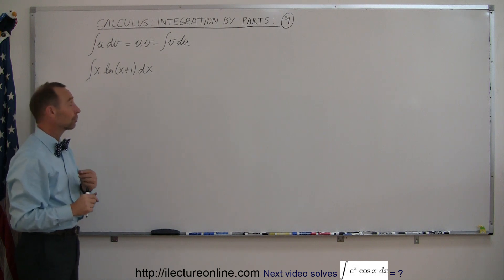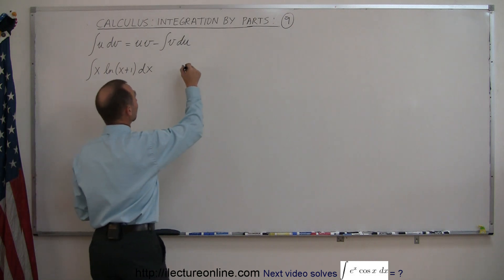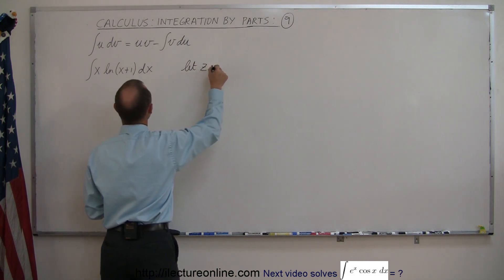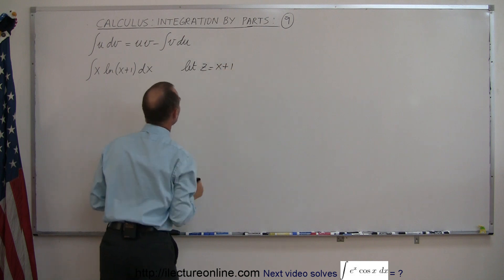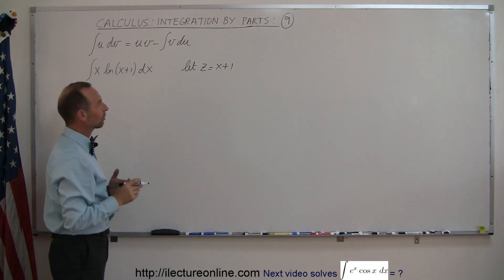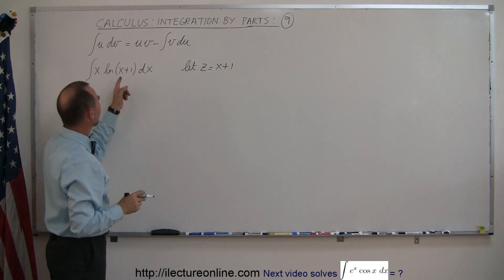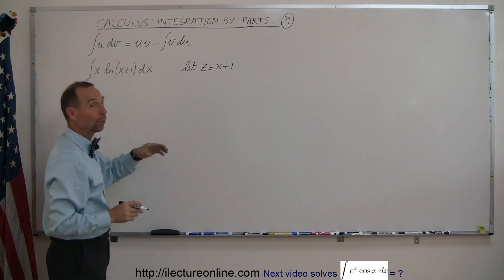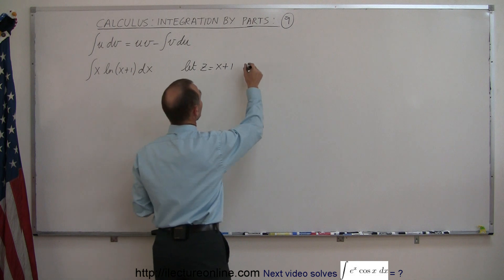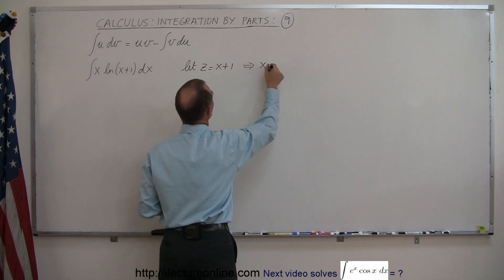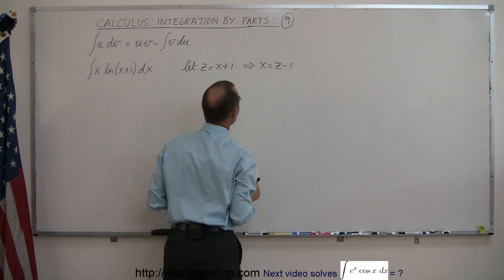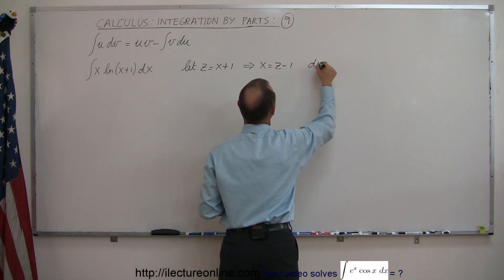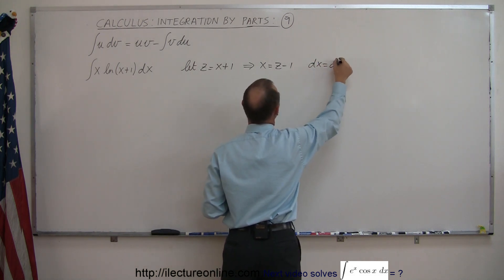We're first going to make a substitution. Let z equal x plus 1. So if z equals x plus 1, we replace x plus 1 by z. When we solve for x, we get x equals z minus 1. Taking the differential, dx equals dz.